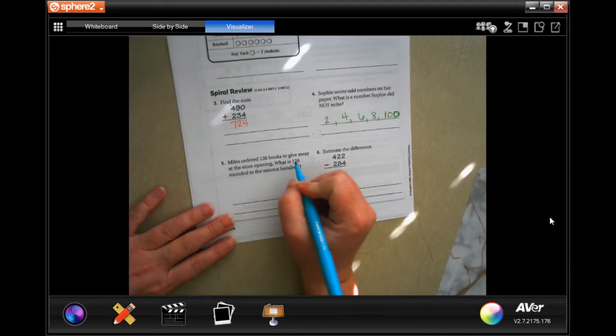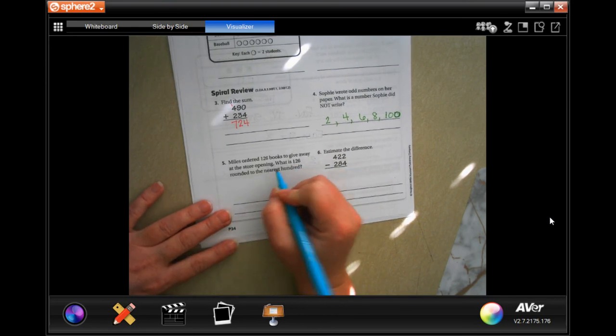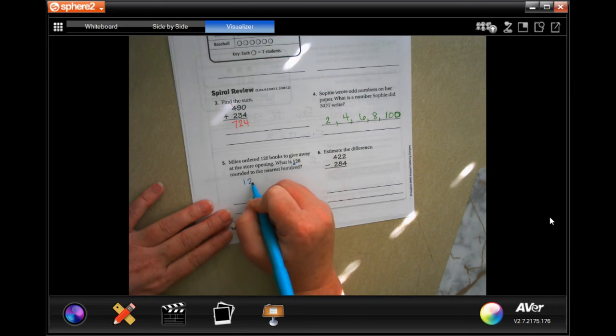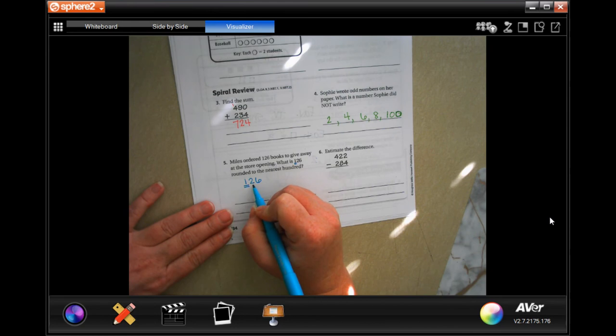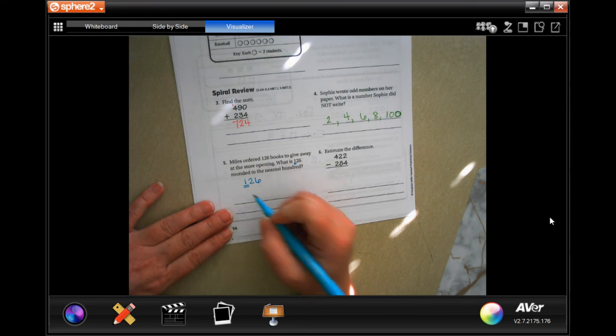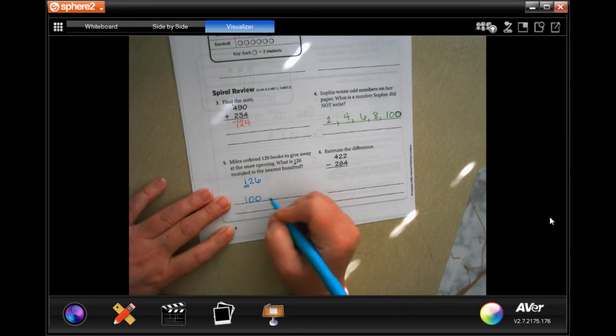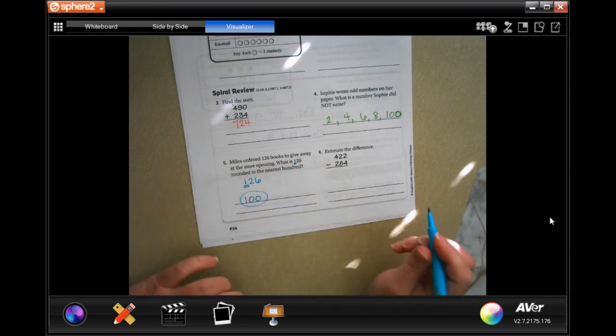Miles ordered 126 books to give away from the store opening. What is 126 rounded to the nearest hundred? So we're going to look at the next number. If it's five or bigger, it's going to go up. If it's not, it's going to stay the same. Two is smaller than five, so it's going to round to 100.